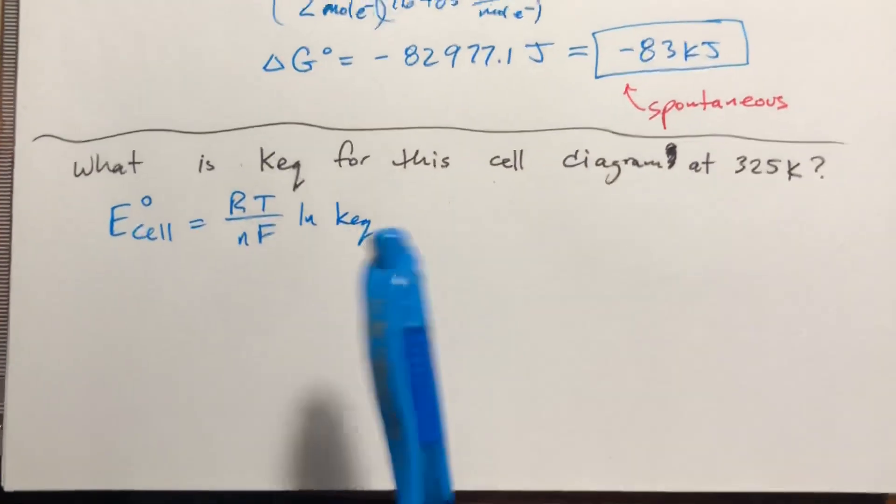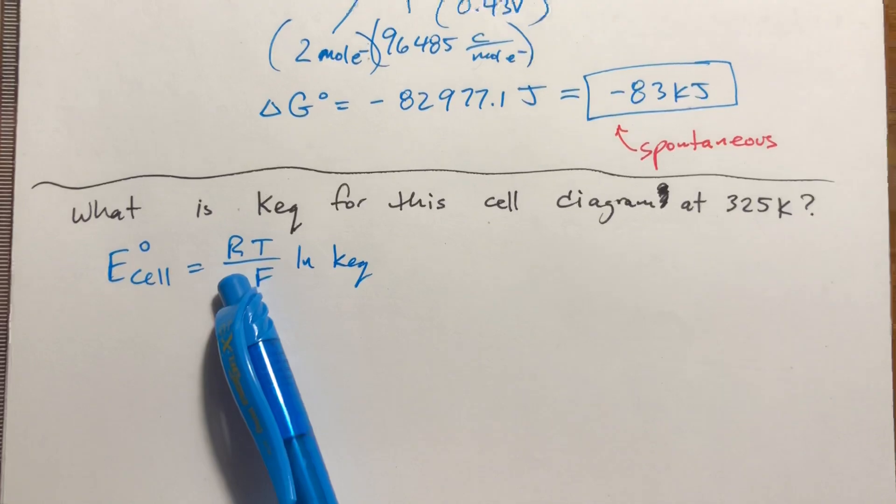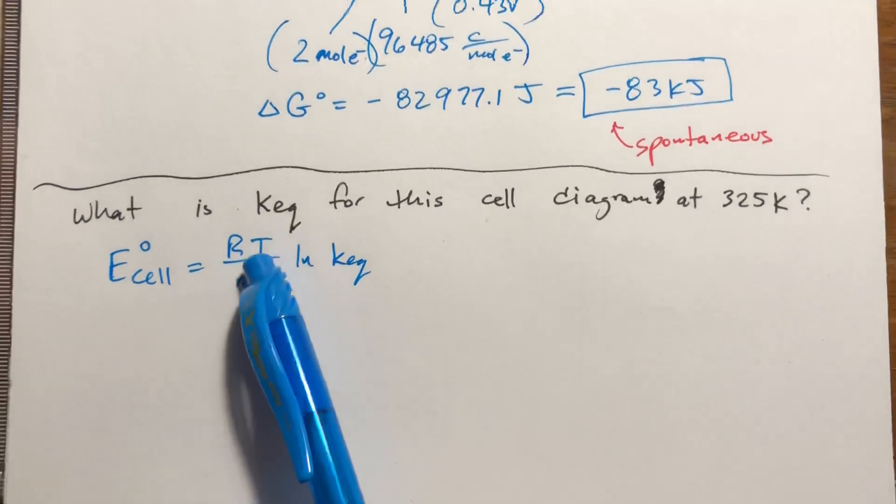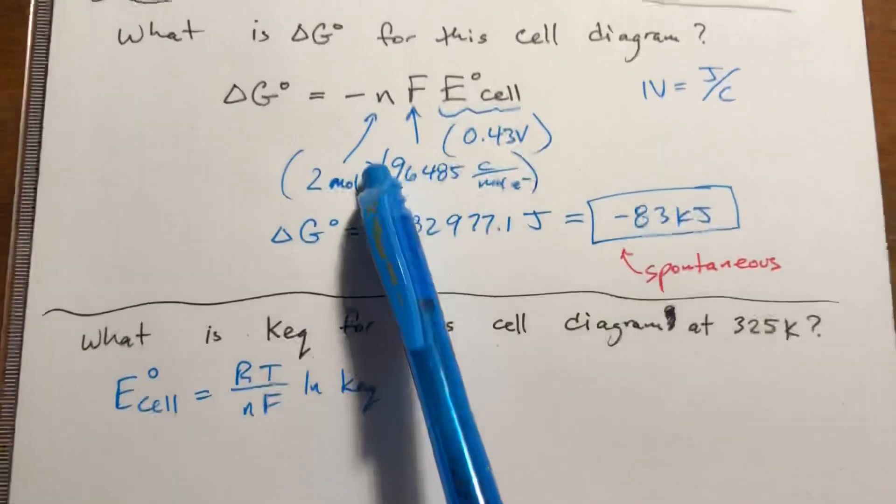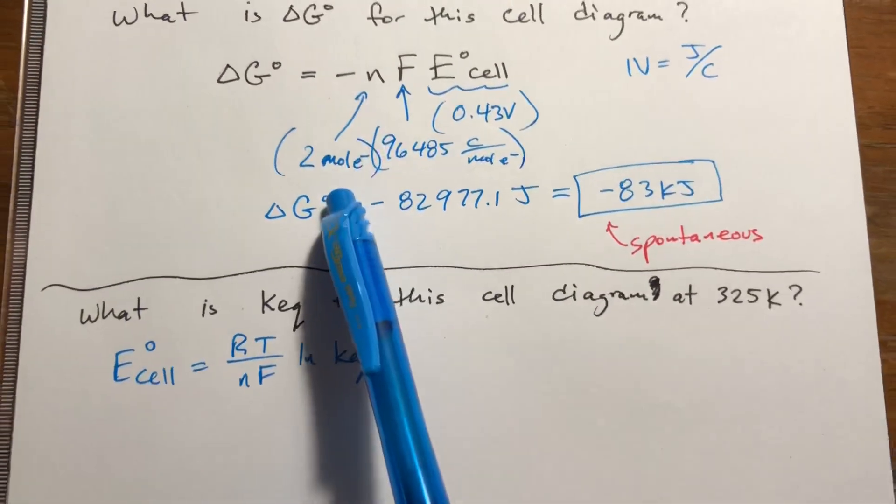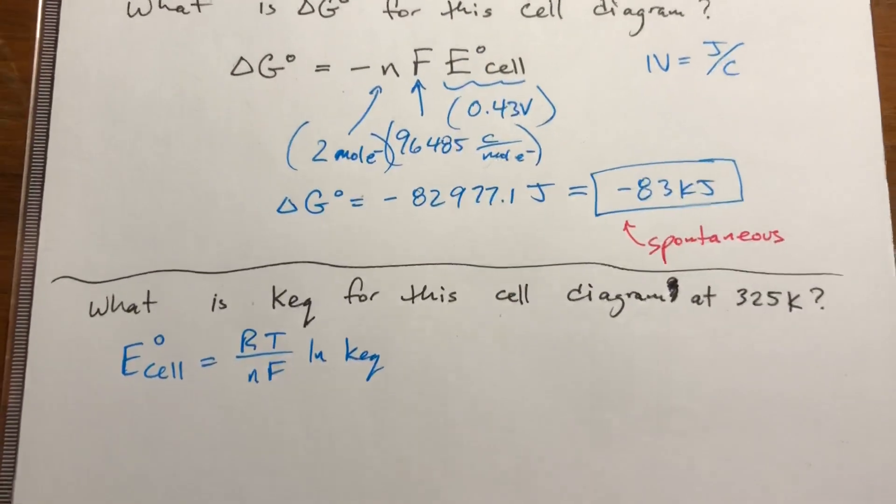We have cell potential. R is 8.314 joules per mole Kelvin. T is the temperature in Kelvin, and we want to know this at 325. N is the number of moles of electrons, which was 2, same N as the previous problem. And F is Faraday's constant, which is the same as the previous problem.